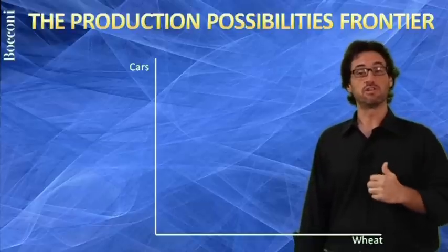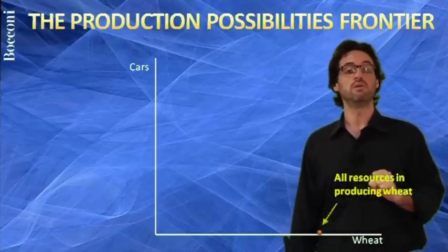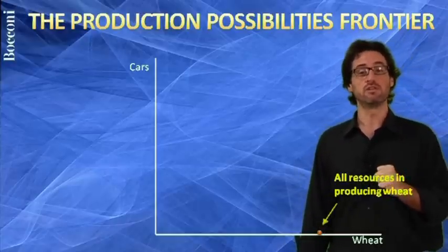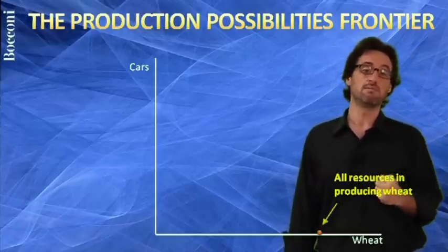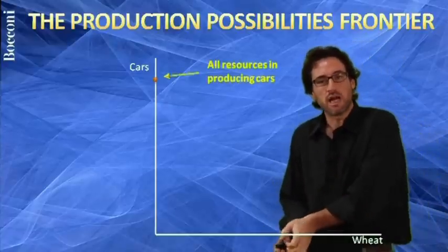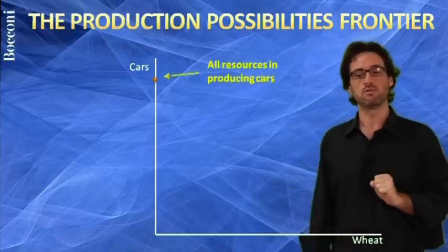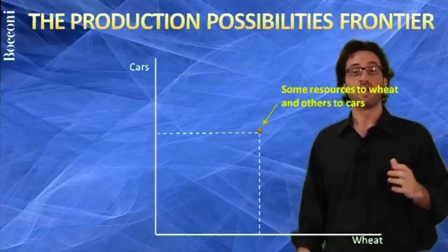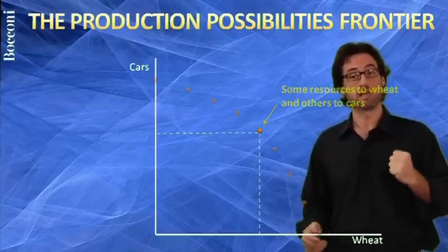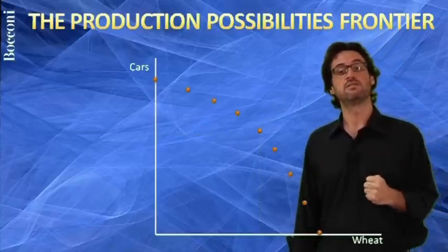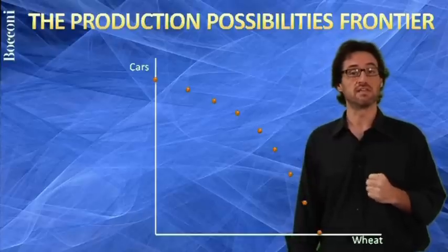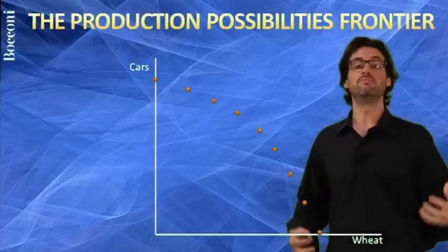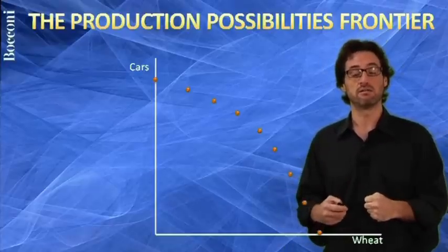If the economy produces only wheat, it will be able to produce this much wheat. Whereas if all the resources, all the labor, all the capital goes to producing cars, it will produce this amount of cars. Of course, the economy can produce some cars and some wheat. So this is where you find another equilibrium in this economy. As you can see, there are thousands of combinations that will be working, and this is what all these dots represent. Different combinations on which the economy can produce, if they put all the resources at the particular use.